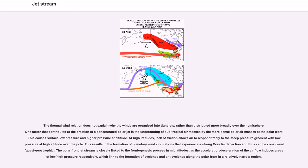The thermal wind relation does not explain why the winds are organized into tight jets, rather than distributed more broadly over the hemisphere. One factor that contributes to the creation of a concentrated polar jet is the undercutting of subtropical air masses by the more dense polar air masses at the polar front. This causes surface low pressure and higher pressure at altitude. At high latitudes, lack of friction allows air to respond freely to the steep pressure gradient with low pressure at high altitude over the pole. This results in the formation of planetary wind circulations that experience a strong Coriolis deflection and thus can be considered quasi-geostrophic.